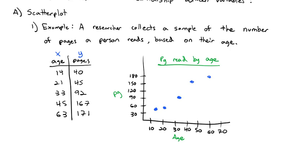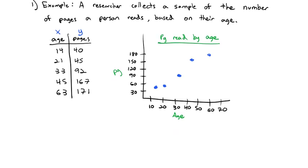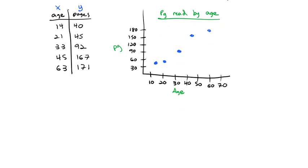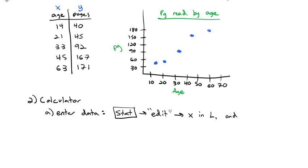Now our calculators can also make these scatterplots. So I'm going to show you how to make this exact same scatterplot on the calculator. So first I'll write out the instructions, then we'll go ahead and do it. First, we have to enter the data. And the way we enter the data is you'll start by hitting the stat button. And then you'll select edit. And then you can put x in list 1 and y in list 2.